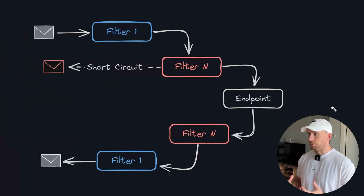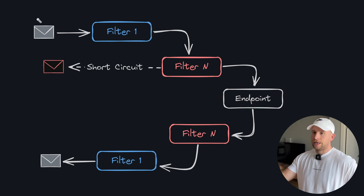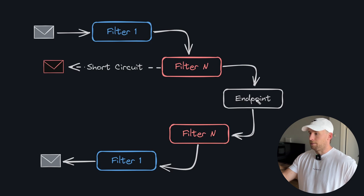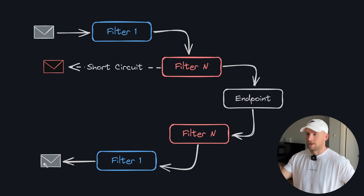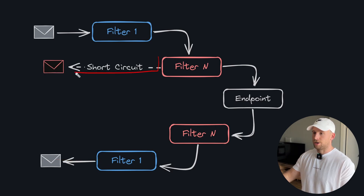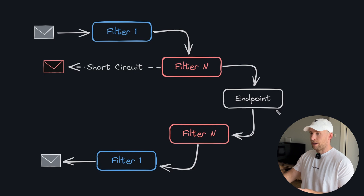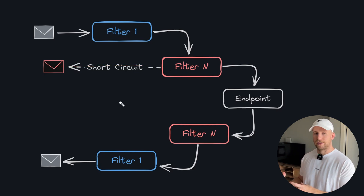So we've created these validators — how do we actually use them? The next step is creating endpoint filters. Endpoint filters give us the ability to build reusable functionality that we can apply to endpoints as needed. All they are is pre and post logic before we reach our endpoint. A request comes into filter one, gets passed to filter two, then to our endpoint, and then goes back through the filters and the response comes out. One powerful thing about filters is being able to short circuit the request — rather than forwarding it to our endpoint, we can return a response directly. That's what we're going to use in our request validation filter.